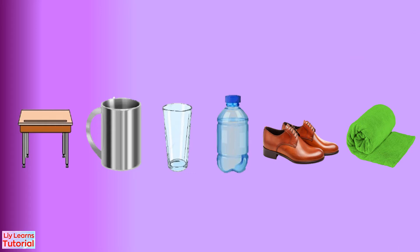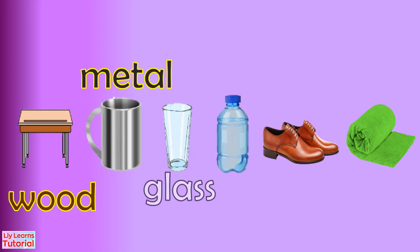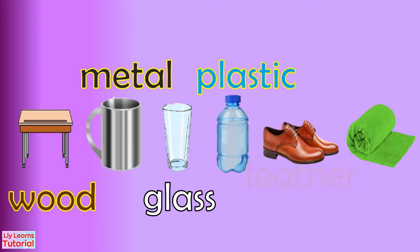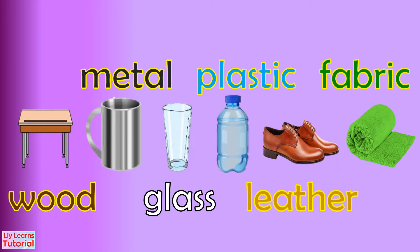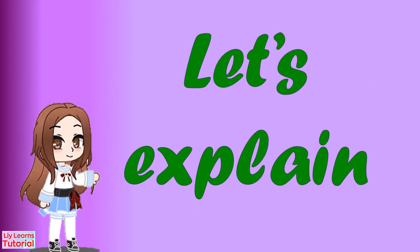Everything we see is made from materials such as wood, metal, glass, plastic, leather, or fabric. Let's explain them in more detail.